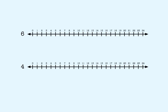Consider these two numbers: 6 and 4. We want to find the smallest number that's a multiple of each of these numbers. Let's look at these numbers on a number line. Let's start with the multiples of 6. 6 times 1 is 6. 6 times 2 is 12. 6 times 3 is 18. 6 times 4 is 24.